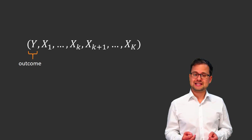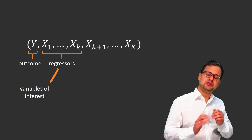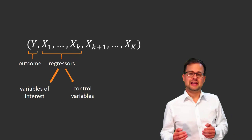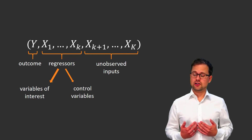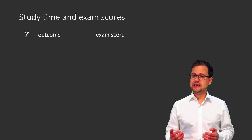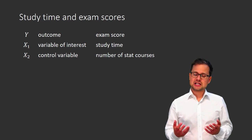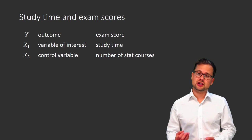We'll need regressors. Let's say the first k inputs are observed, so they will be our regressors — either variables of interest or control variables. All the other inputs that are not regressors, x_(k+1) up to x_K, will be unobserved inputs. To make this more concrete in the study time example: y is the exam score on the final exam, and x1 could be study time — that is our variable of interest.